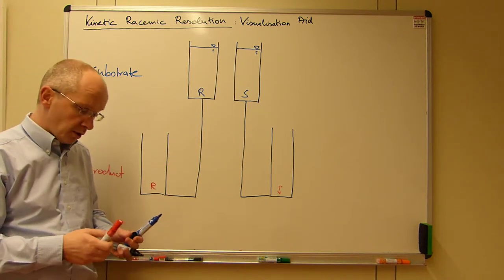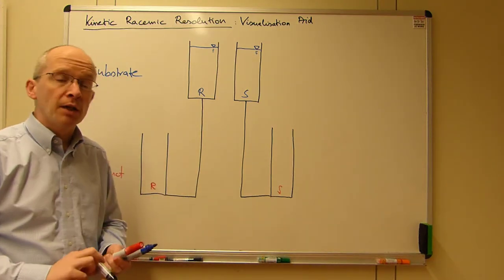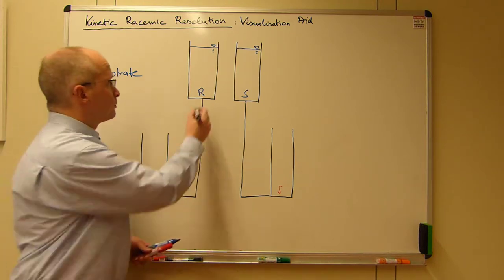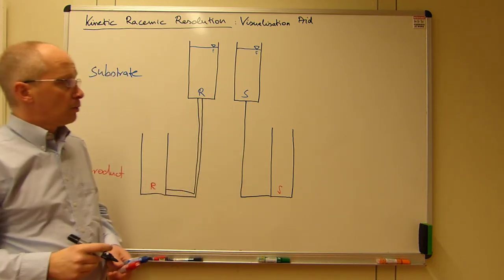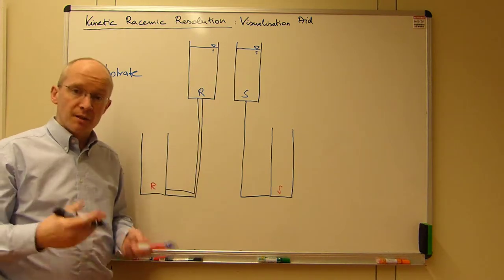But this is not the interesting case. So what is now the kinetic implication of that? The kinetic implication is that we have two lines with different diameters, which still means that both will be drained, but not at the same rate.